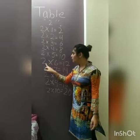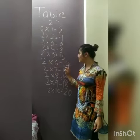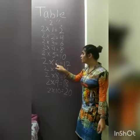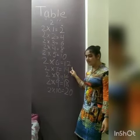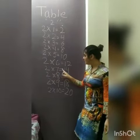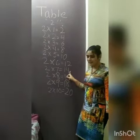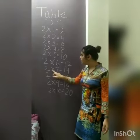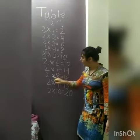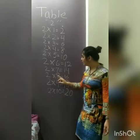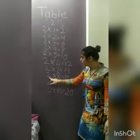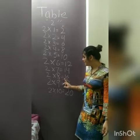2 6's are 12. 2 7's are 14. 2 8's are 16.